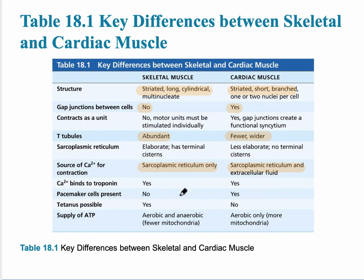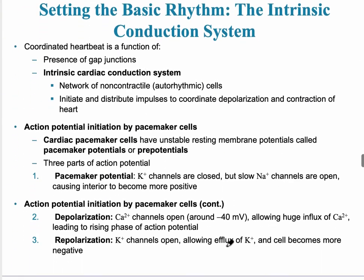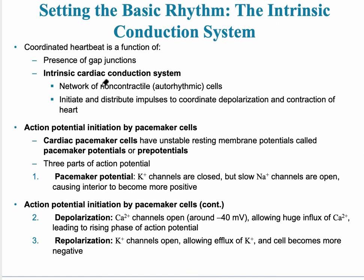Pacemaker cells can depolarize on their own and are part of the intrinsic conduction system. The intrinsic conduction system consists of non-contractile, auto-rhythmic cells that make up about 1% of all cells in the heart. The action potential is initiated by these pacemaker cells, which are found in areas like the SA node and the AV node. They depolarize much more easily than contractile cells.